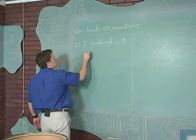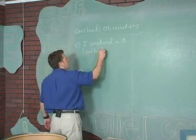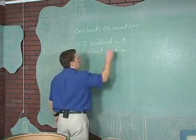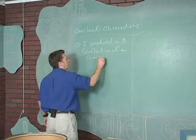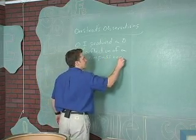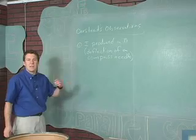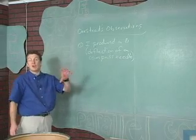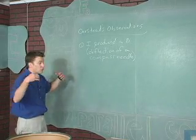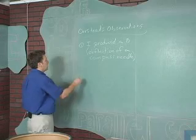What he saw was a deflection of a compass needle. And that's what led to the idea that a wire or charge in motion created or produced a magnetic field.